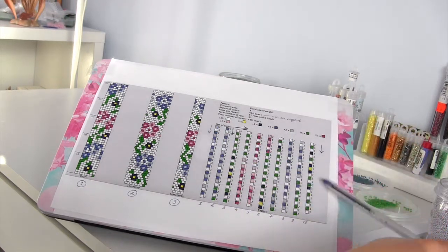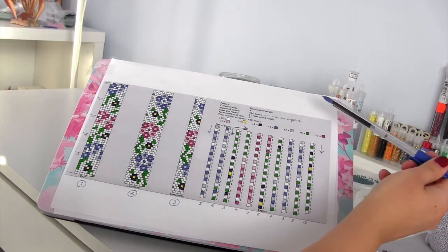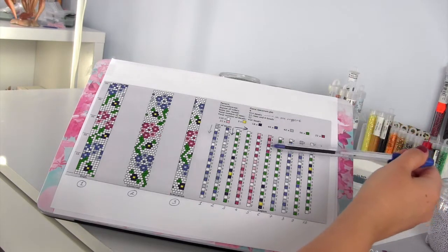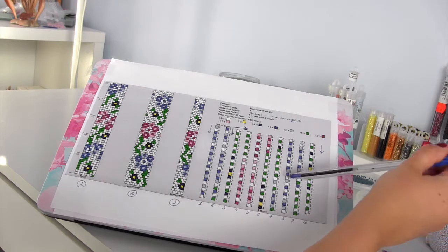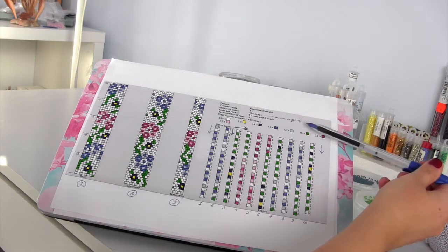This is called one report. So basically one whole pattern not repeated. And then you also see the rows per repeat and total number of rows and the total number of beads you're using for one report. For this particular one you're using 416 beads.